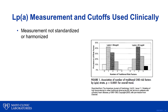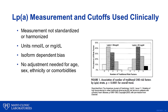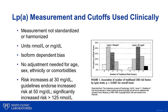Some aspects related to lipoprotein A measurement and cut-offs: the measurement is not standardized nor harmonized — units are either nanomoles per liter or milligrams per deciliter. There is an isoform-dependent bias. There is no need to adjust for age, sex, ethnicity, or comorbidities. Risk increases at values of 30 mg/dL; however, guidelines endorse increased risk at 50 mg/dL, and there is significantly increased risk when the value exceeds 125 nanomoles per liter.